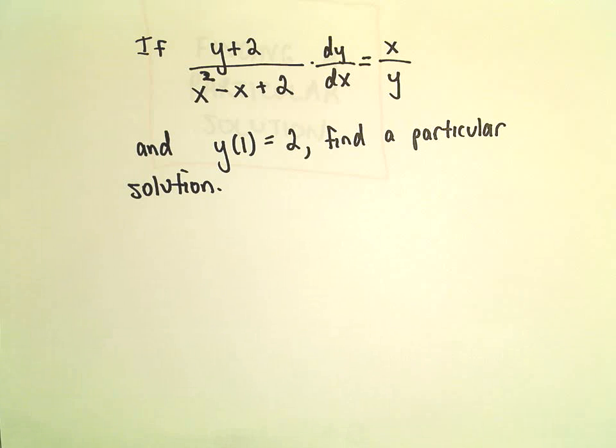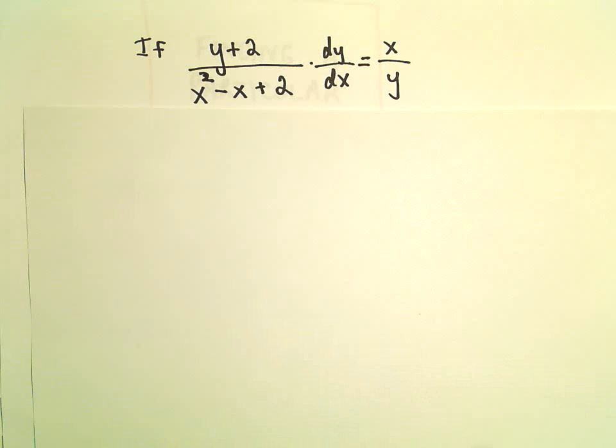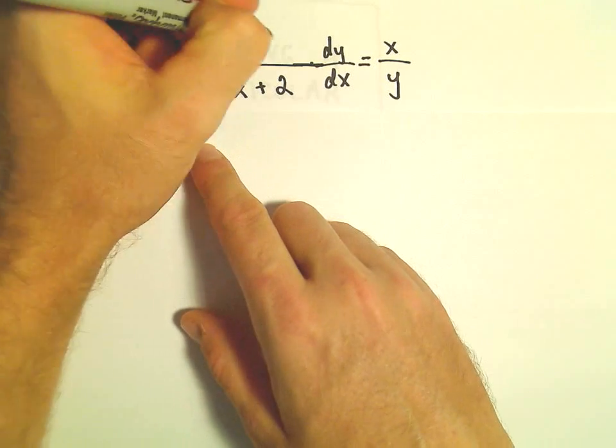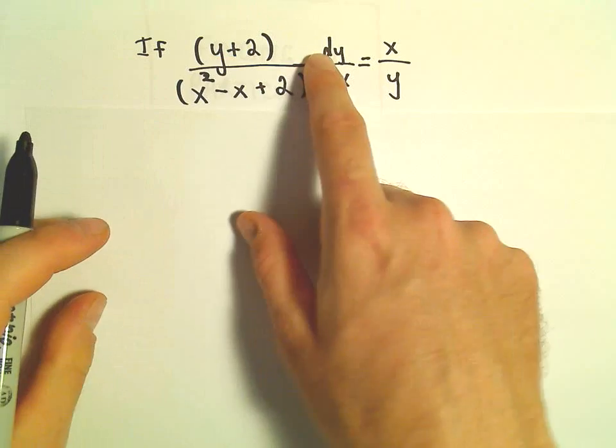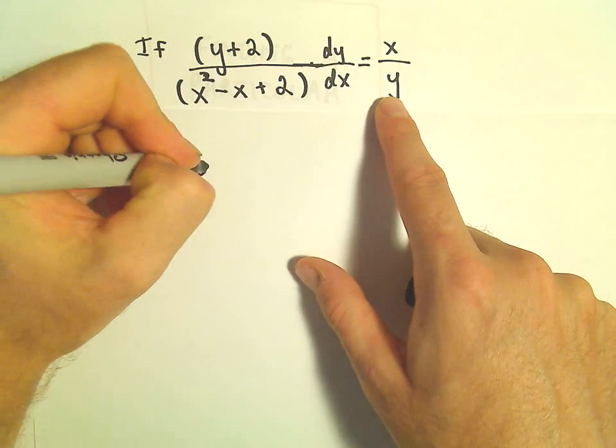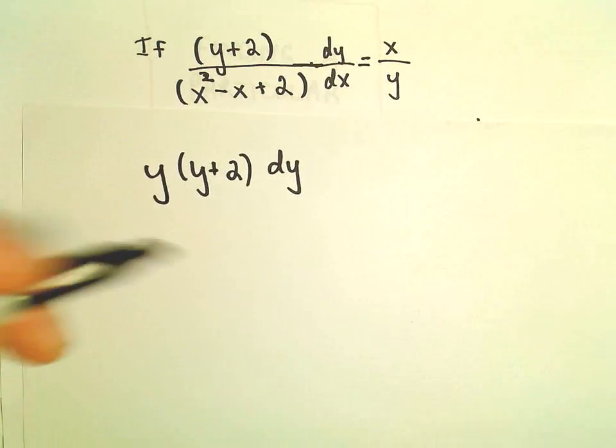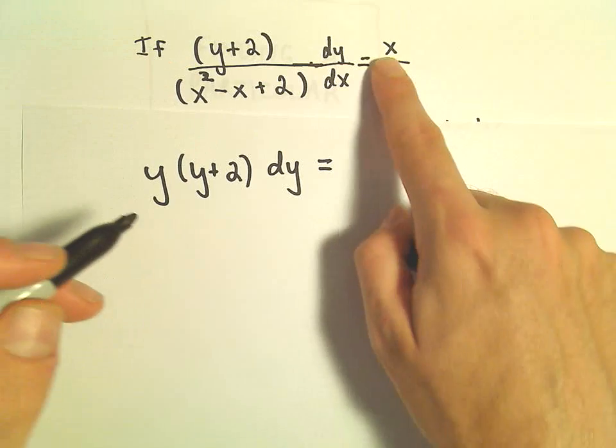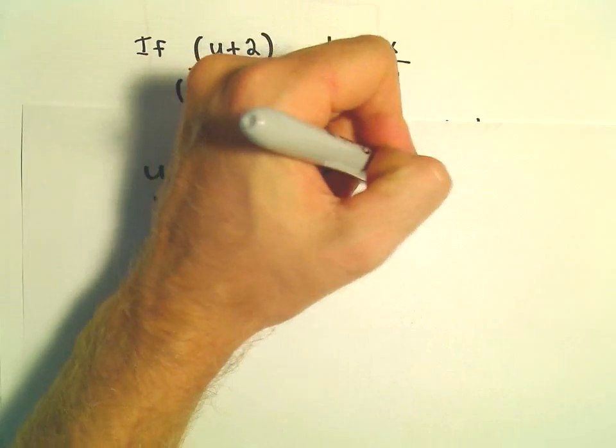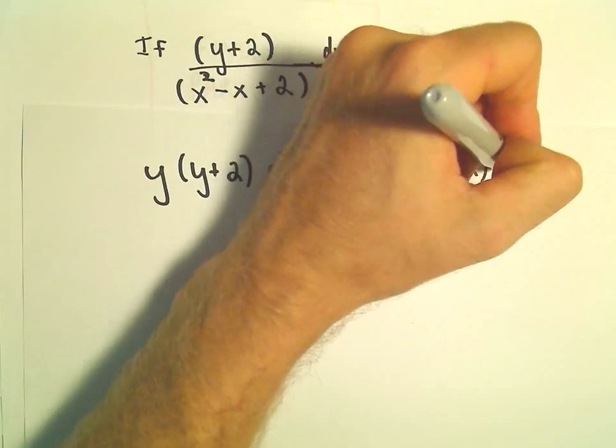So again, I see this as being a separable differential equation, so the first thing I'm going to do is basically cross-multiply. If you think about the (y+2) times dy, we'll take all of that and multiply it by y. On the right side, I'm going to take the x, multiply it by (x²-x+2) dx.